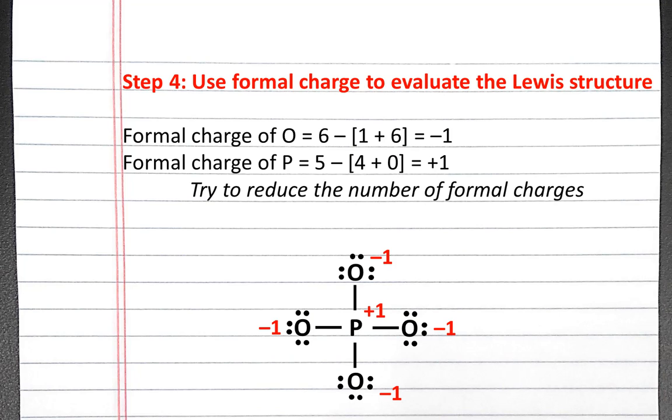We see that there is both a plus one and a negative one formal charge in our Lewis structure. So we can try to reduce the number of formal charges.